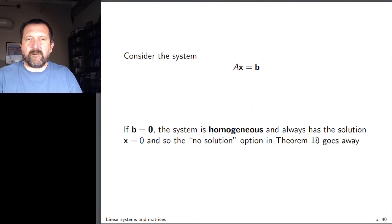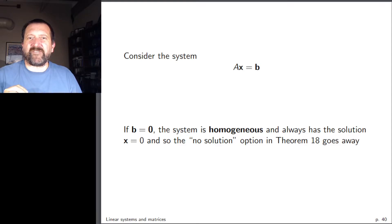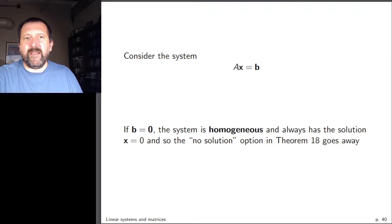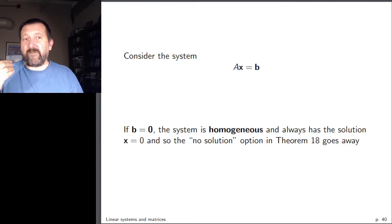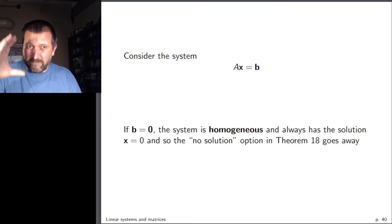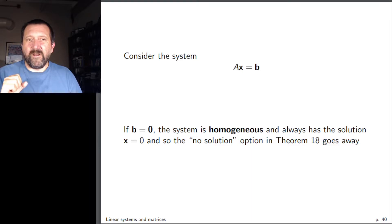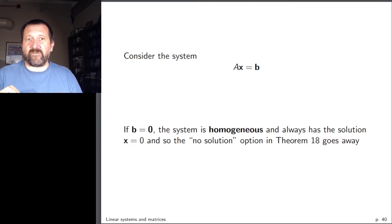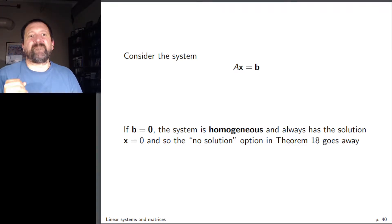Vectors are typically assumed to be column vectors in mathematics. A special type of linear system arises when the b term on the right is the zero vector — in this case the system is homogeneous. The solution x = 0 is always present, so the case of no solution never arises. The system always has at least one solution: either one or infinitely many.